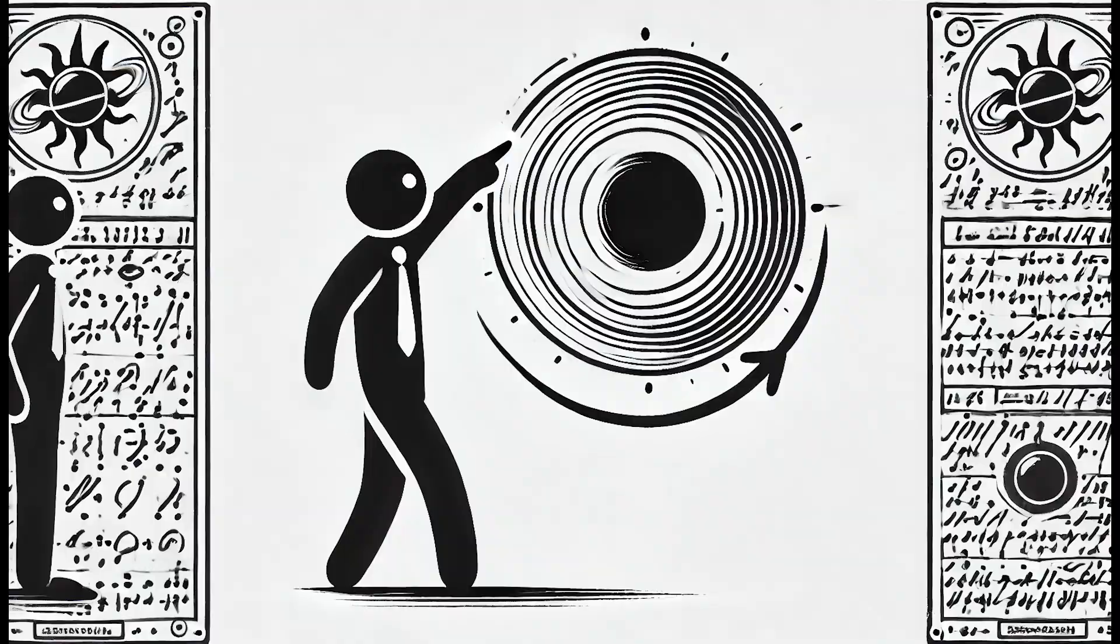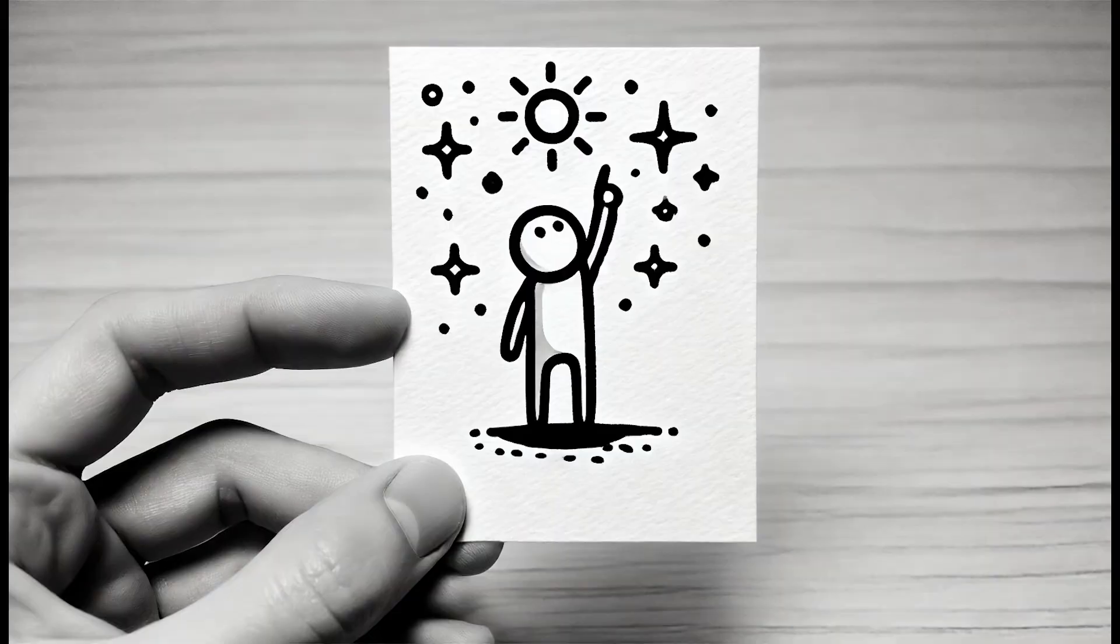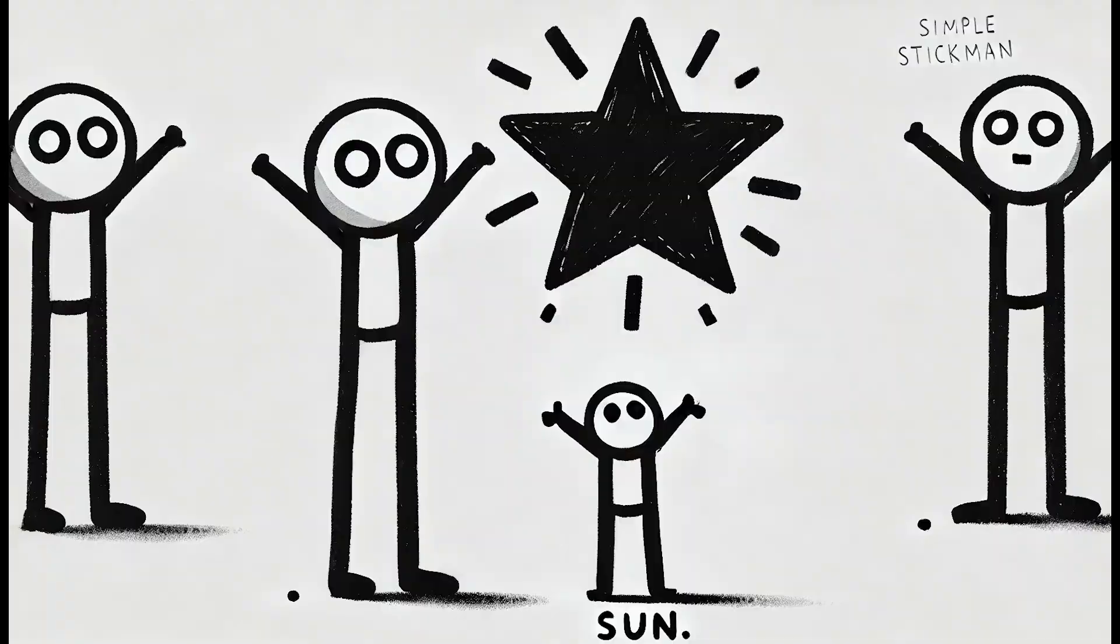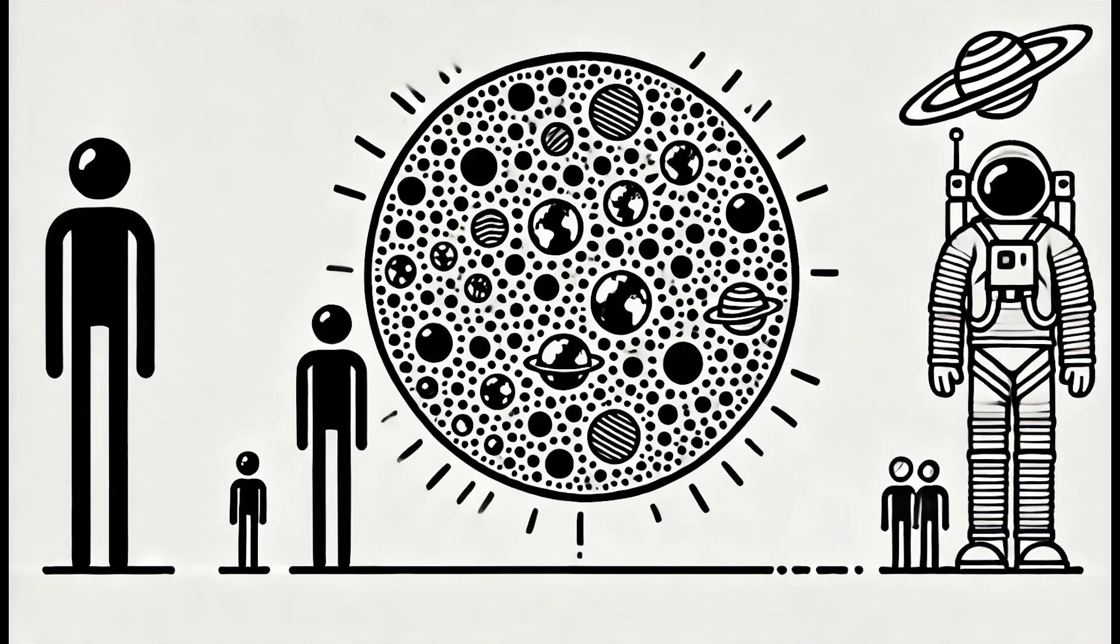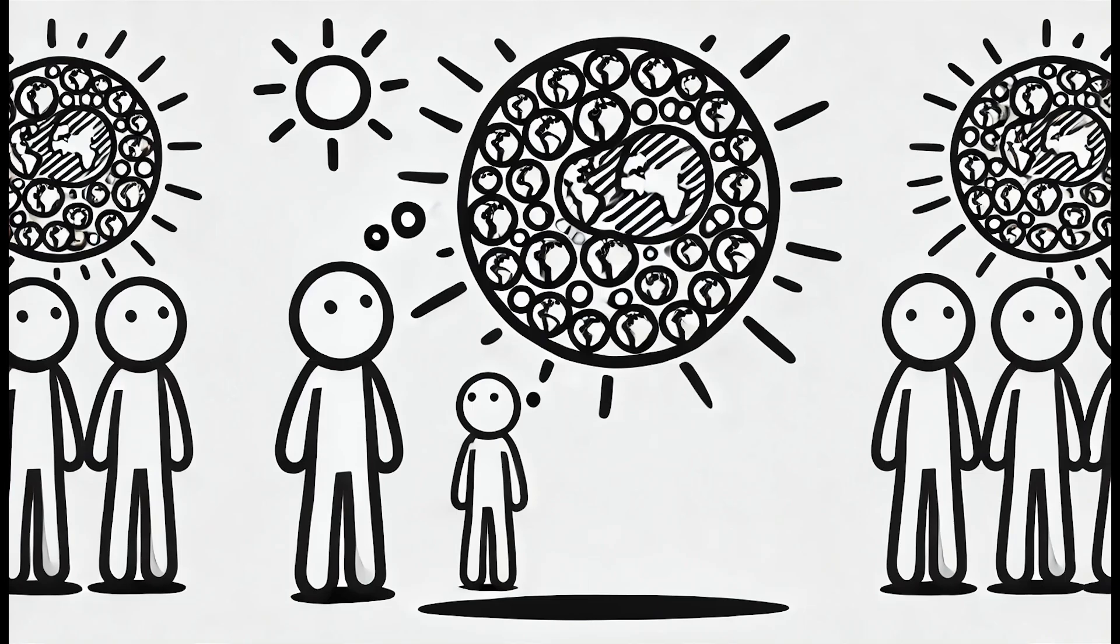First off, let's talk about the sun. Did you know the sun is actually a star? But not just any star, it's a massive one. It's so huge that you could fit about 1.3 million Earths inside of it. Imagine that.